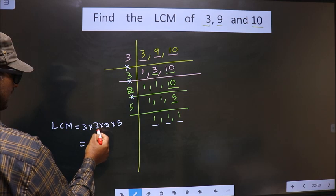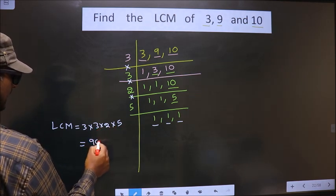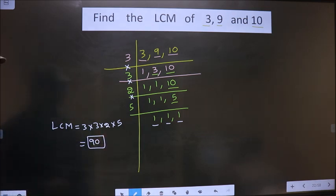That is 3 into 3 into 2 into 5. So 3 into 3 is 9. 9 into 2 is 18. 18 into 5 is 90. This is our answer.